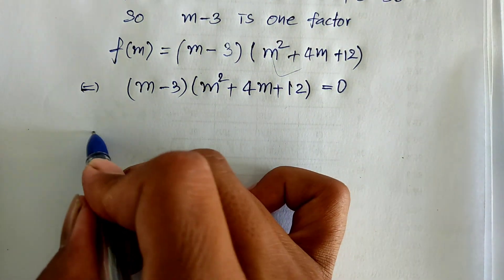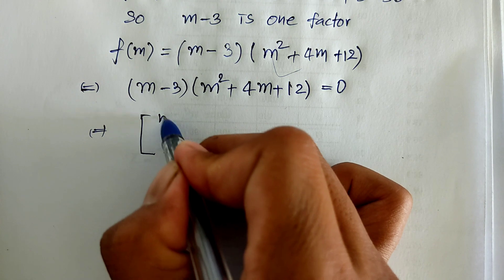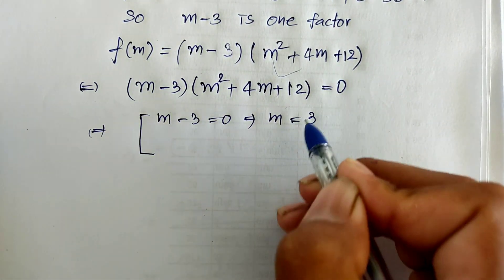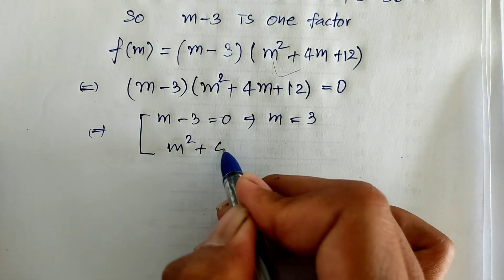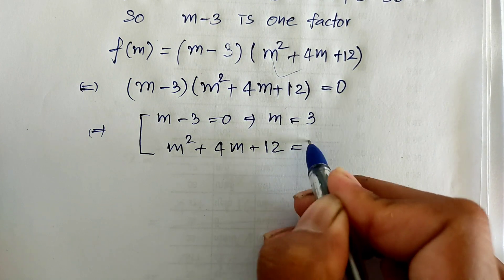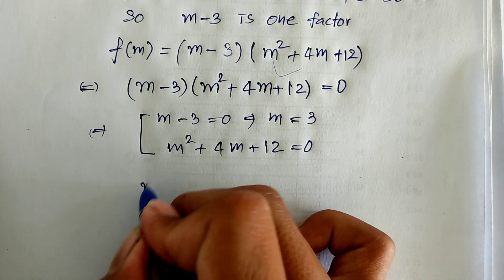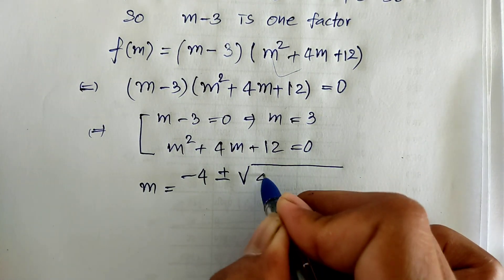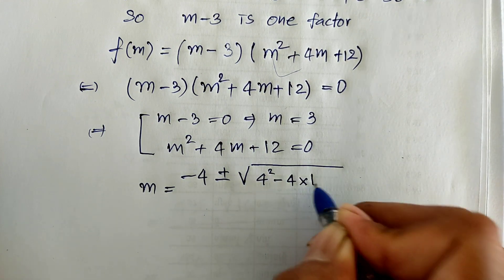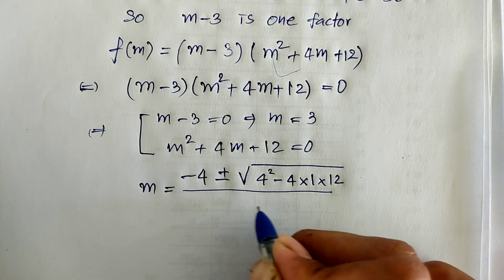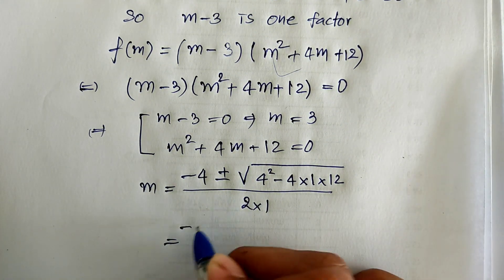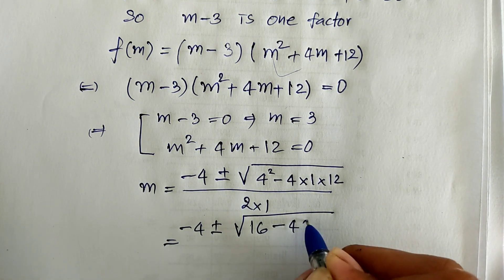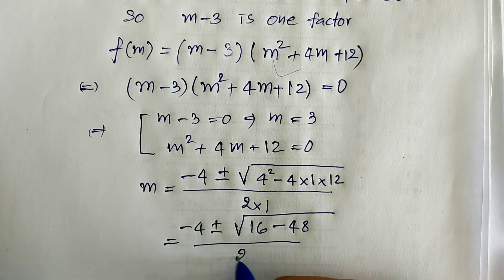If two factors equal 0, we get m minus 3 equals 0, giving m equals 3. And for the second factor, m square plus 4m plus 12 equals 0, so m equals minus 4 plus or minus square root of 4 square minus 4 times 1 times 12, divided by 2 times 1. We get minus 4 plus or minus square root of 16 minus 48, divided by 2.